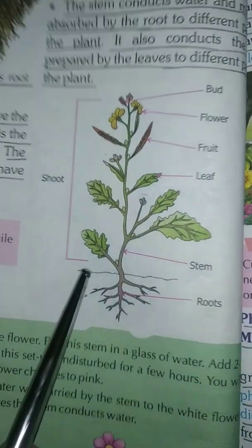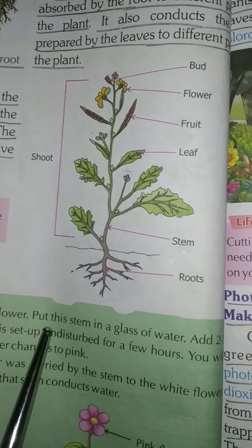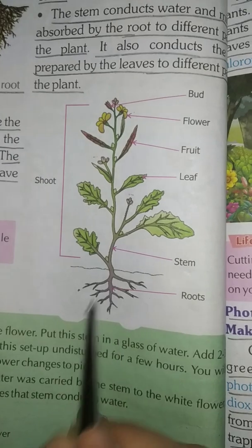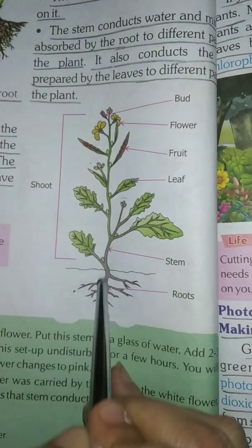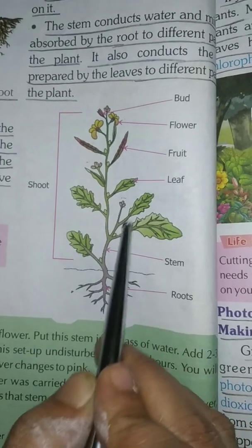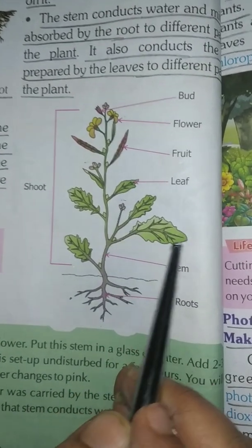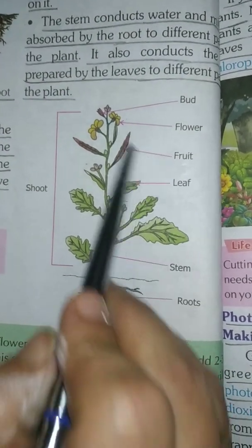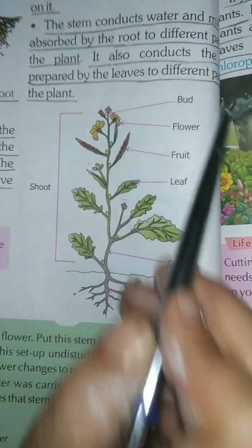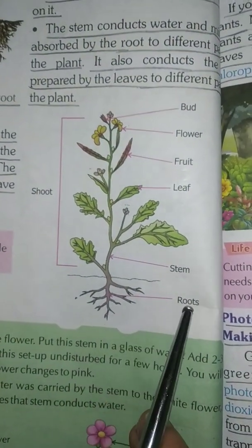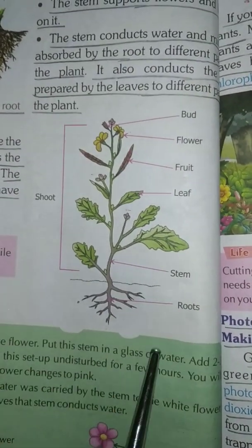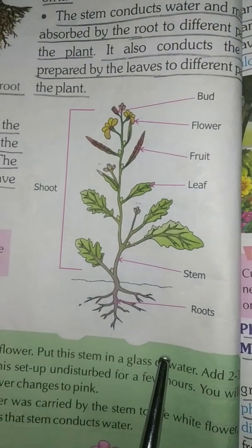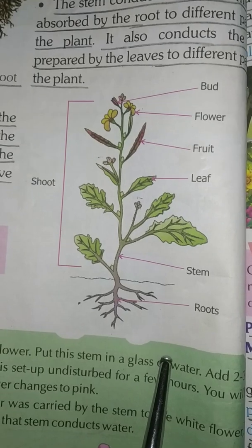Now take out your copies and we will draw the parts of the plant. Draw roots, stem, leaf — you can draw any shape of the leaf — fruit, flower, and bud. Write labels for root system and shoot system. Do coloring also, students. Without coloring, you won't get any marks in the exam.